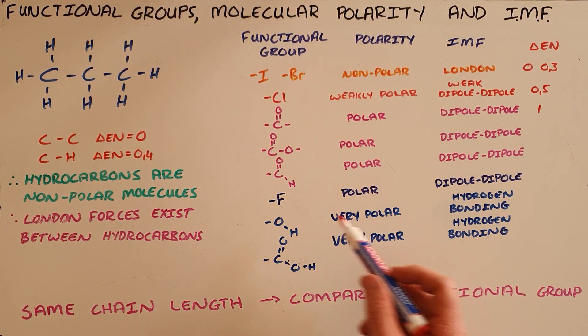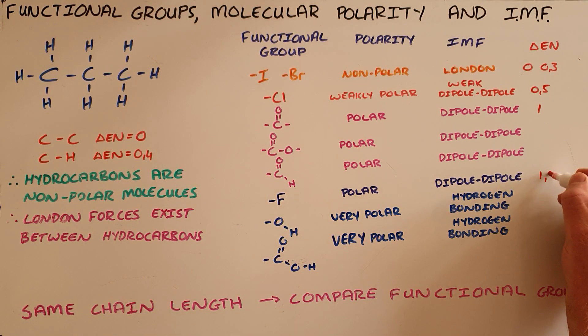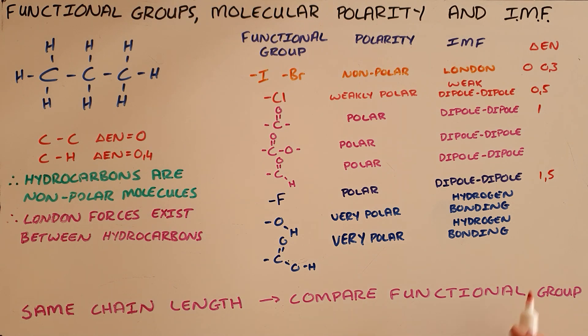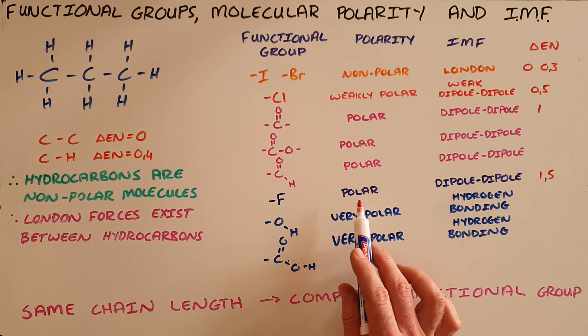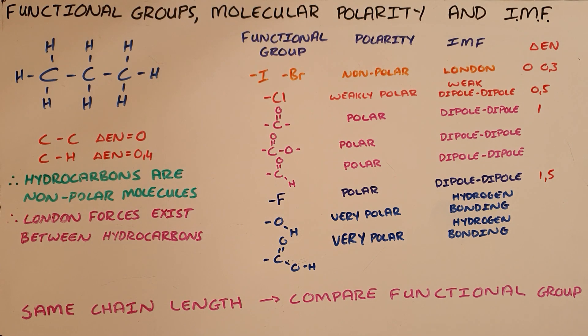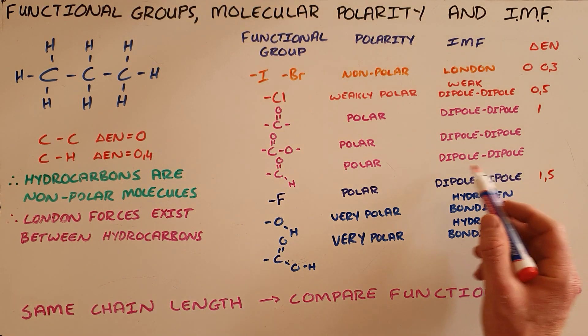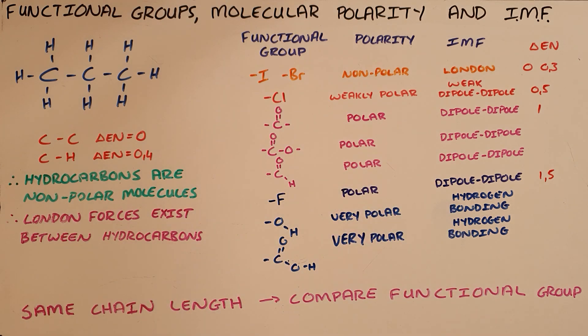The next big increase is that of a fluoro group, because it has an electronegativity difference of 1.5, and as a result, we say that is a polar bond, which makes it a polar molecule, which makes those dipole-dipole intermolecular forces that are stronger than those containing the carbon-oxygen double bond.